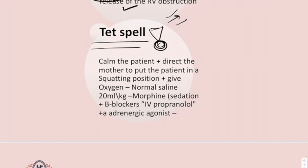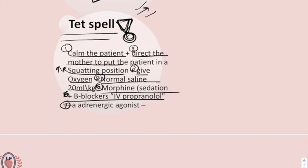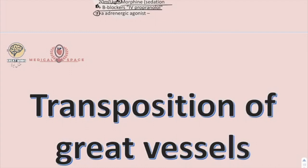When a patient presents with a tet spell in the ER, calm the patient and direct the mother to place the patient in the squatting position to increase venous return and decrease symptoms. Give oxygen and normal saline 20 mL/kg. You can give morphine for sedation, IV propranolol as a beta blocker, and an alpha-adrenergic agonist to increase peripheral vascular constriction.